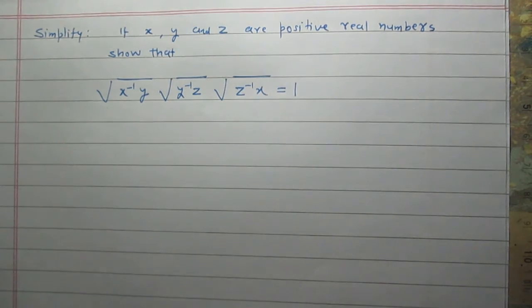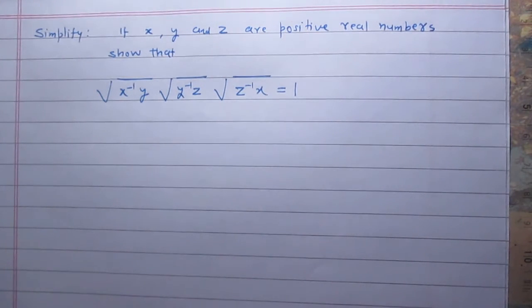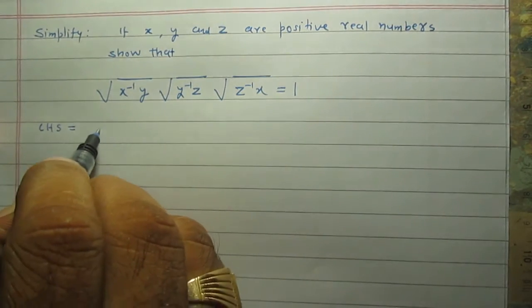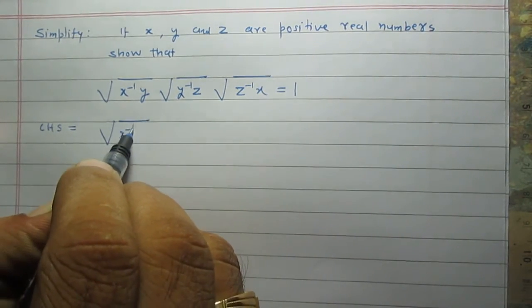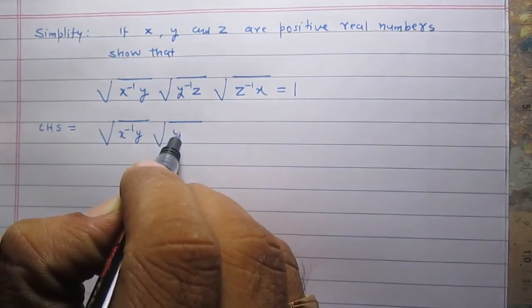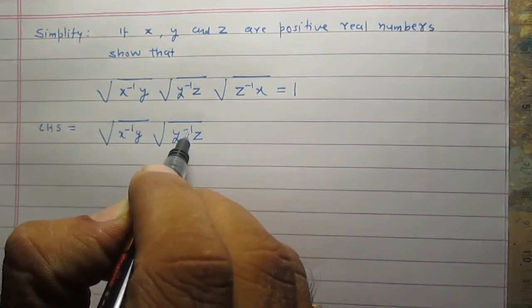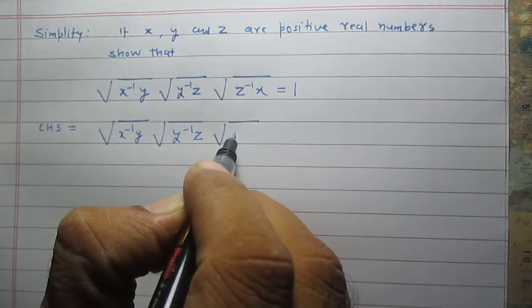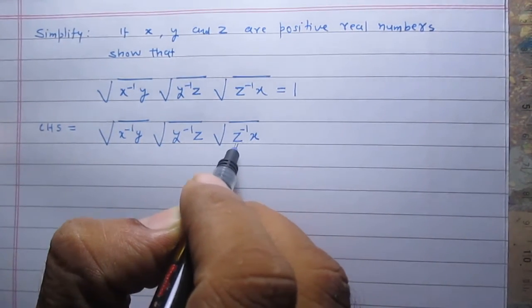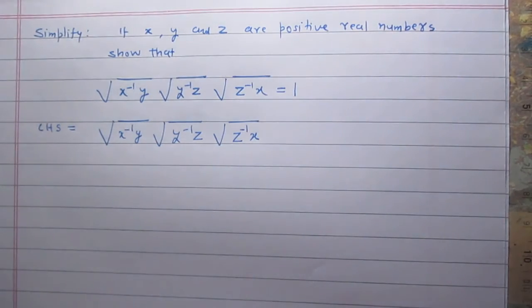In this question we are given that x, y, and z are positive real numbers. To prove this identity, let us consider the left hand side: square root of x raised to the power minus 1 in multiplication with y, the quantity multiplied with y raised to the power minus 1 in multiplication with z, and the last part is z raised to the power minus 1 in multiplication with x.